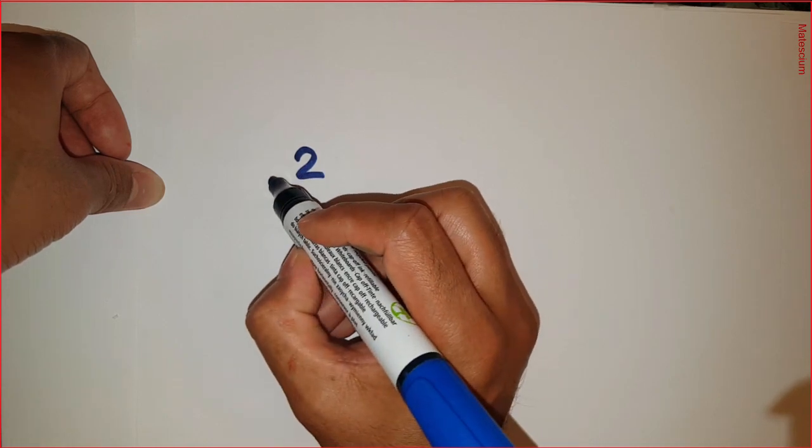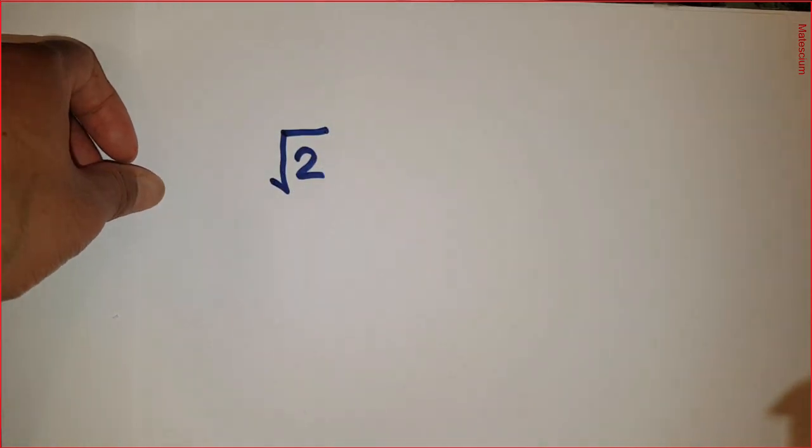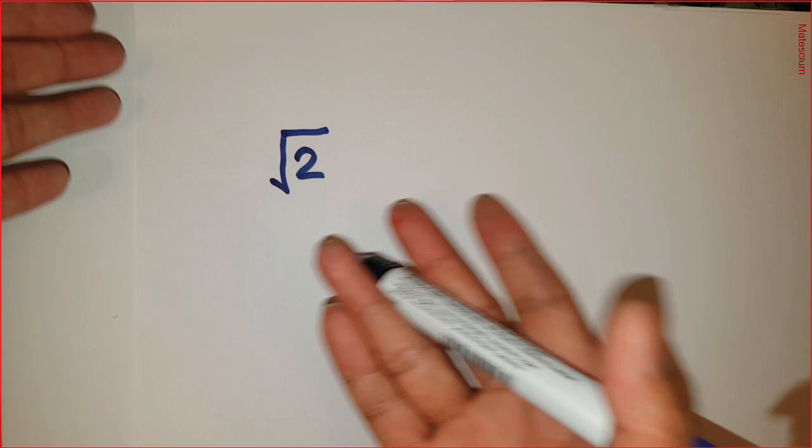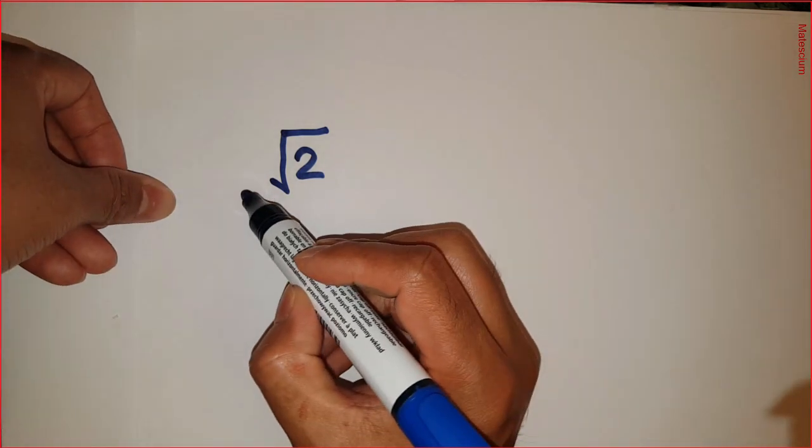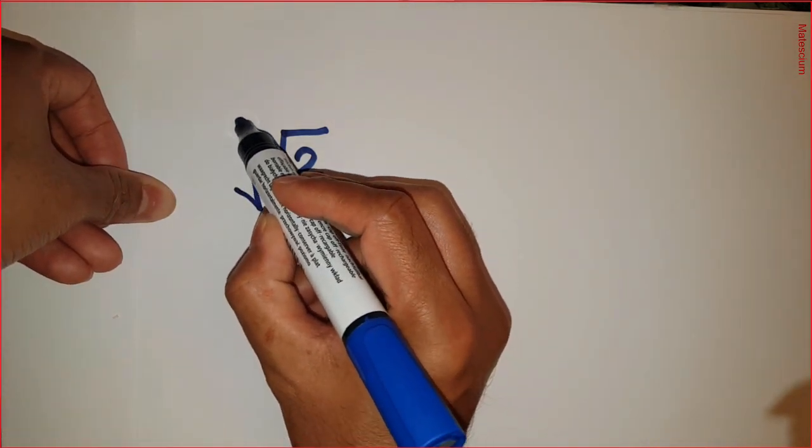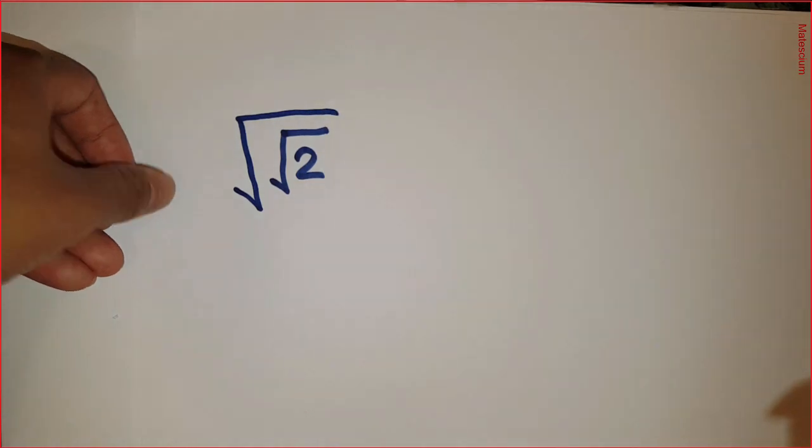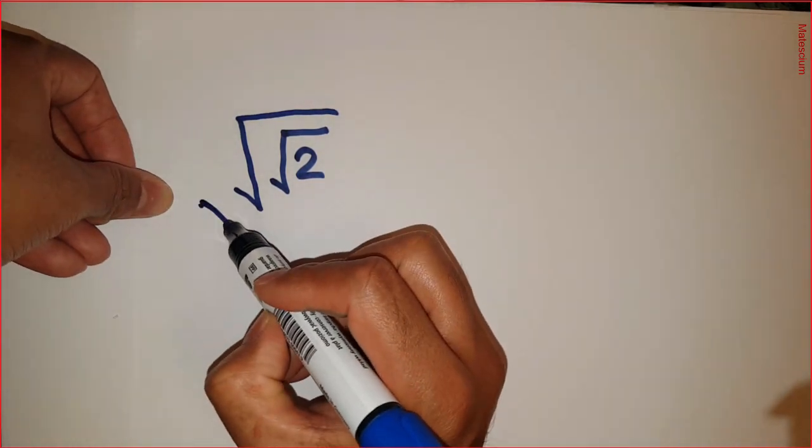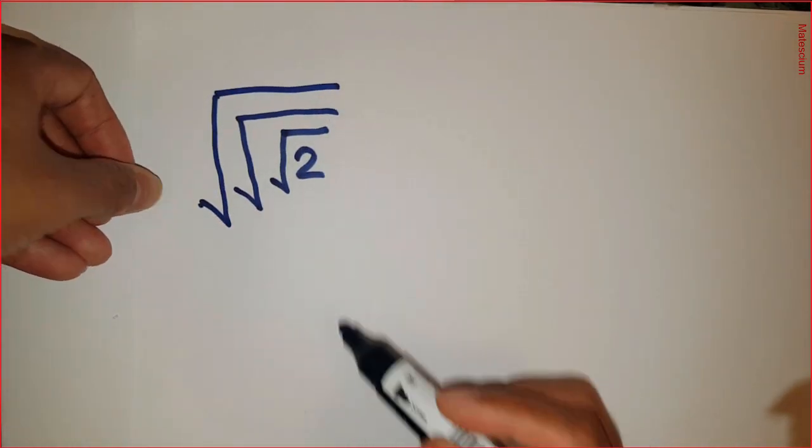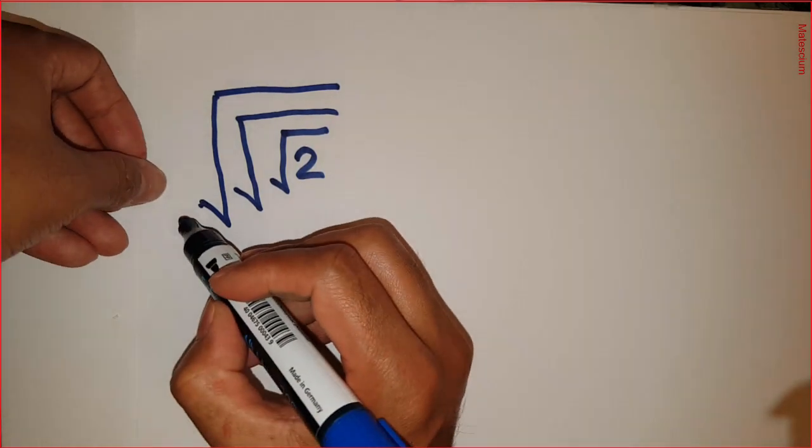2 and it's covered by square root. You know square root 2 has a certain value. So if I make it a little bit complex, this square root 2 is covered by another square root and that is covered by again another square root. Well, that's not the end.